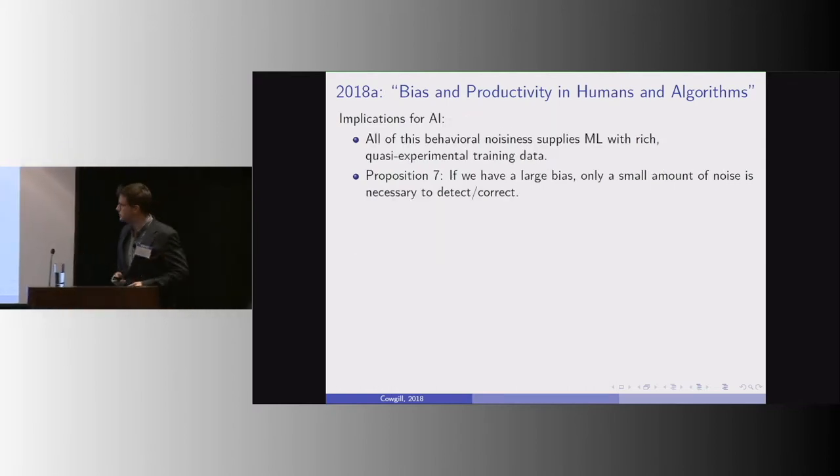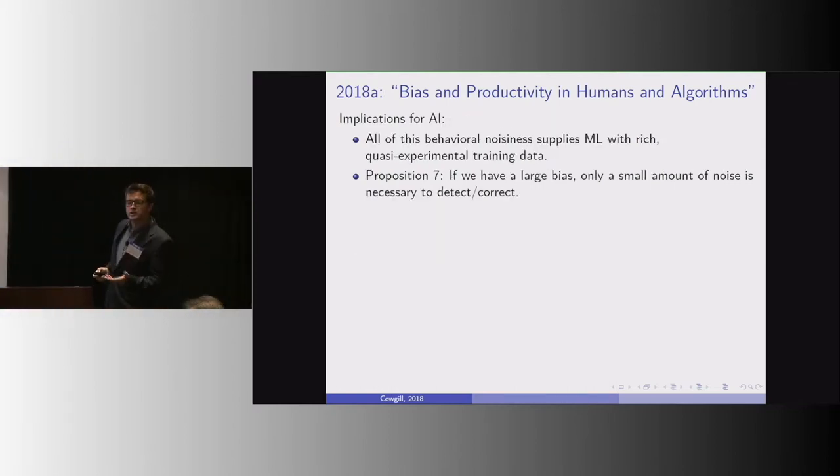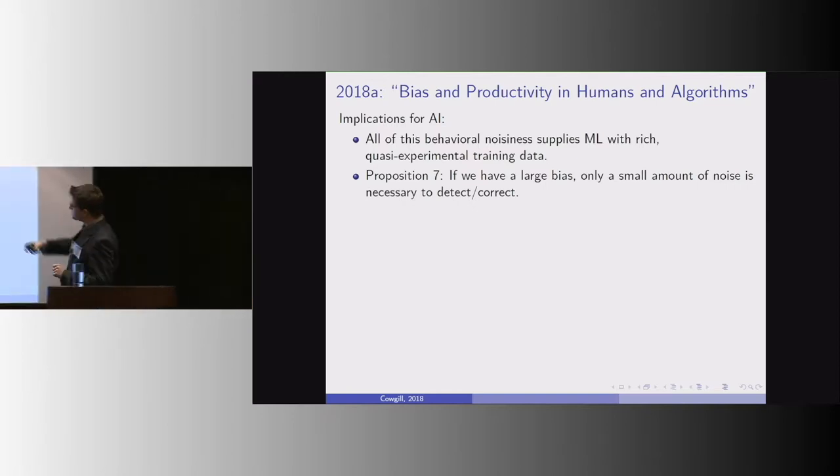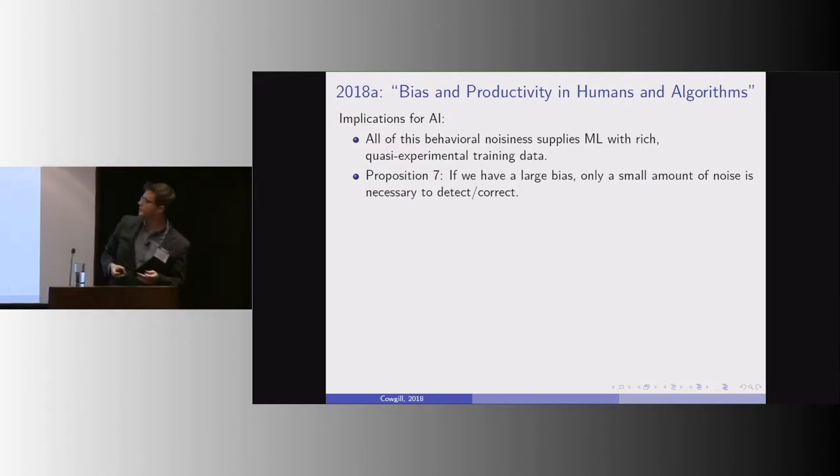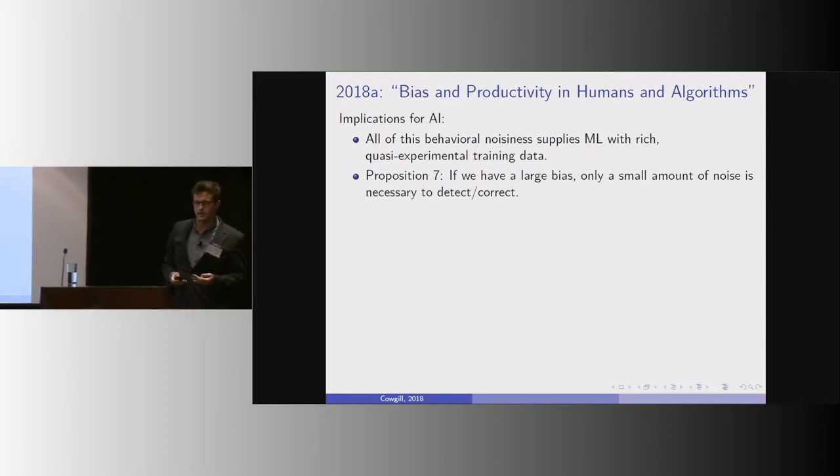And that has implications for AI. The main implication is that the behavioral noisiness supplies ML with better training data. And in the paper, I also go on to show that if we have large biases, you only need a small amount of noise in order to detect and correct them.